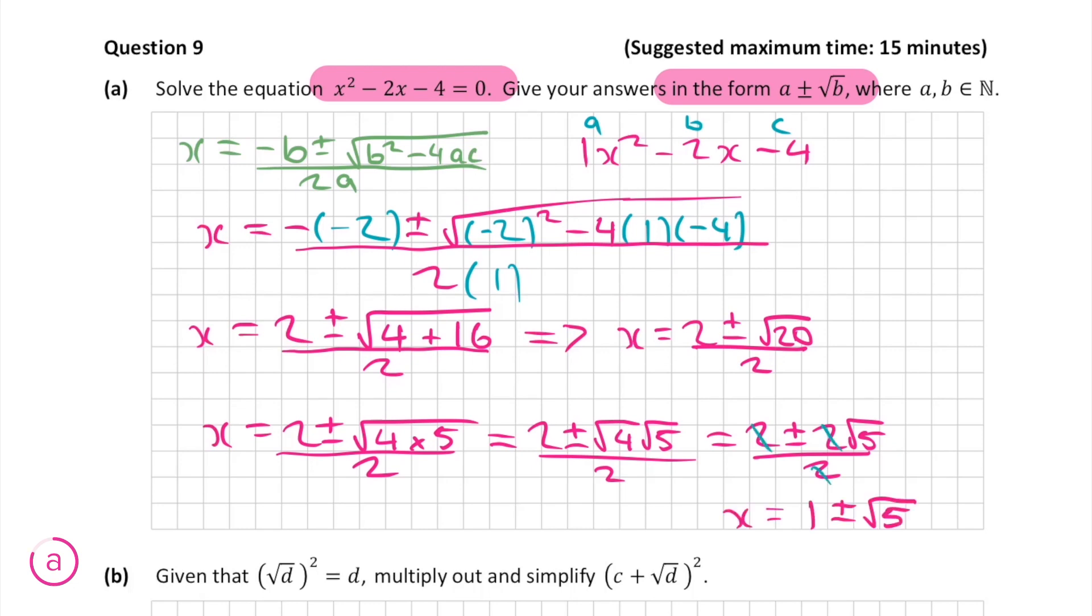Now we can just divide the top line by 2 which leaves us with x equals 1 plus or minus root 5 which is in the form they ask us in the question. For solving part A we get 10 marks.